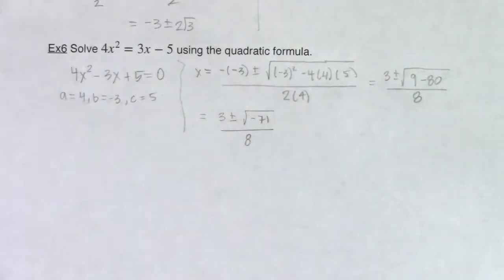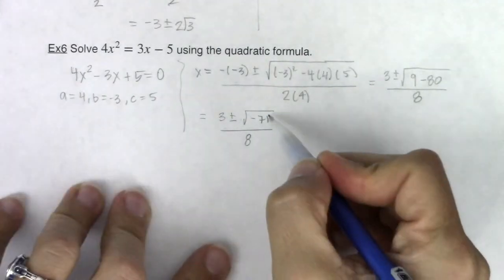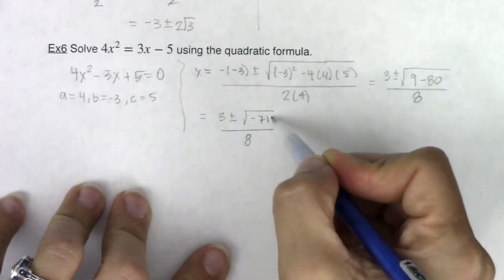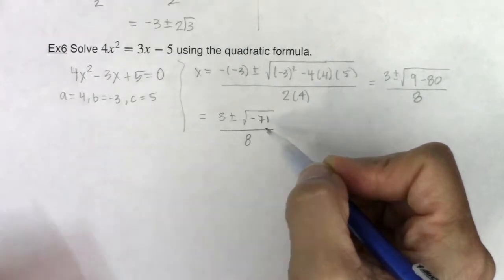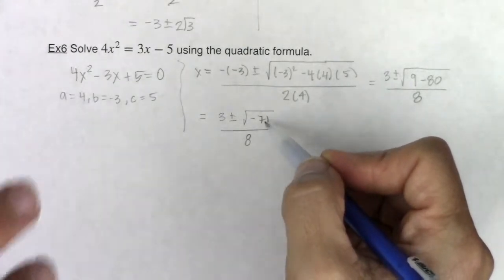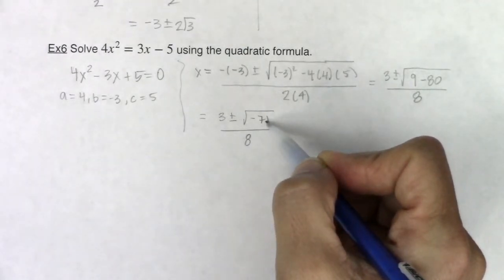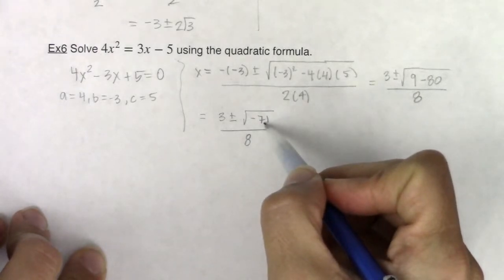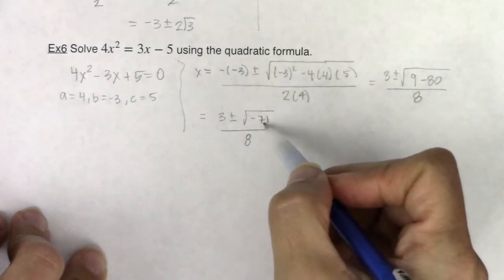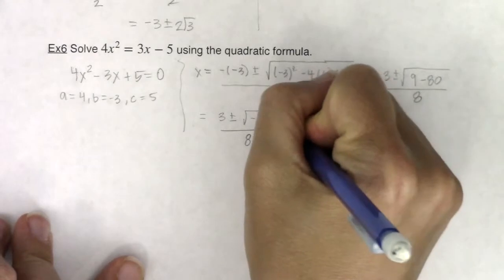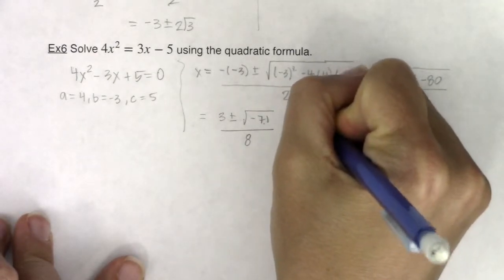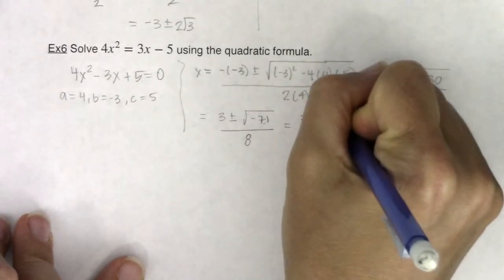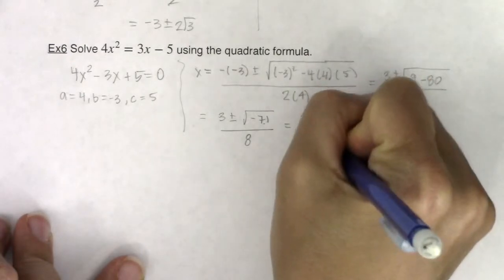For negative 71, I mentioned before, whatever the radicand winds up being, that b squared minus 4ac, it has its own vocabulary term. It's referred to as the discriminant. And we will talk about that in a later example. But I want you to notice the discriminant is negative here. In example 5 was positive, but it's negative here. So we've talked about when you have negative radicals, the first thing you want to do is take out that imaginary unit.